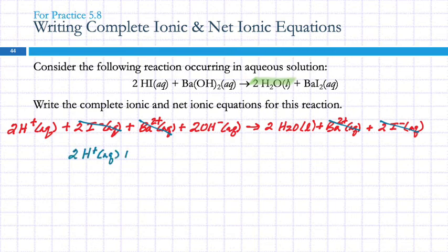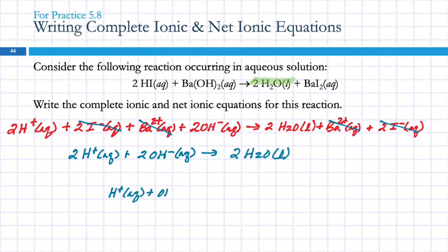2H+(aq) + 2OH-(aq) I'm going to make 2 water molecules liquid. Now, what's weird about that balanced chemical equation? Does it need 2 in front of everything? No. Now, when you get to your net ionic equation, if you can simplify, reduce the coefficients, you should. So, this is best written as H+ plus OH- making H2O liquid.